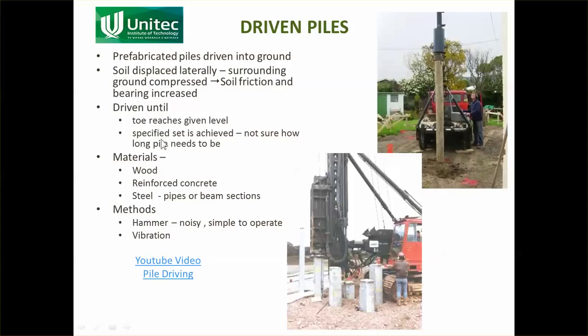Driven piles are either driven to a set depth — for example, the geotechnical engineer may specify getting down to 15 metres where there's a layer of bedrock — but more commonly you measure the set. The set is the distance the pile moves with every hit. The geotechnical engineer looks at the pile driving unit being used and specifies that when each impact can only drive the pile a certain distance — such as 3 or 5 millimetres per hit — the required resistance has been reached and the pile is achieving what it needs to achieve.